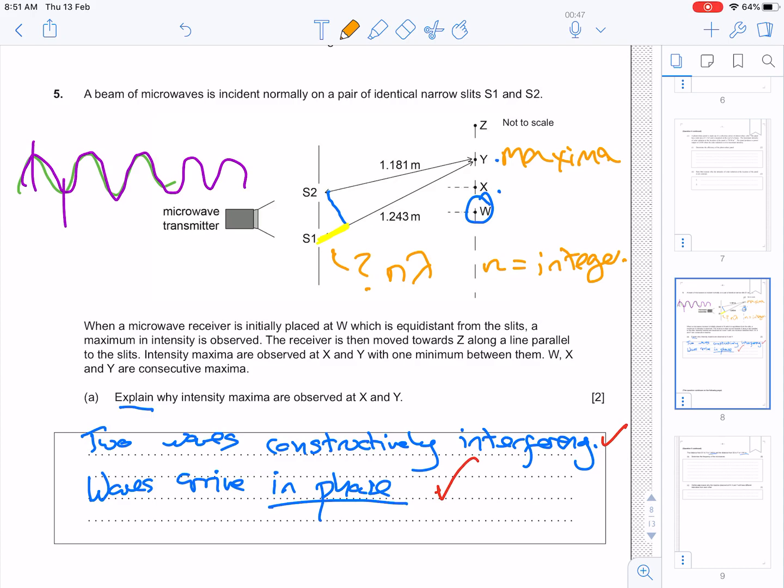At X, we know they're in phase again, because we have a maxima. So, here, the path difference will be the first time they go back in phase, and that will be 1 lambda's worth of extra distance, is the yellow line.